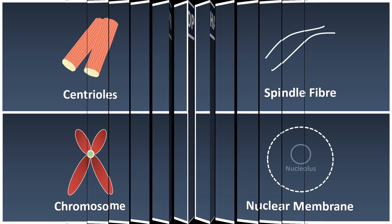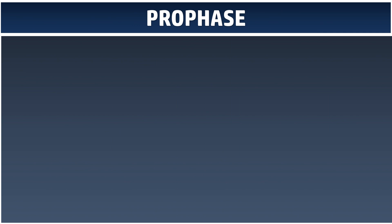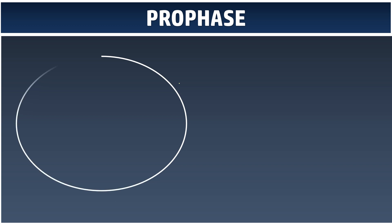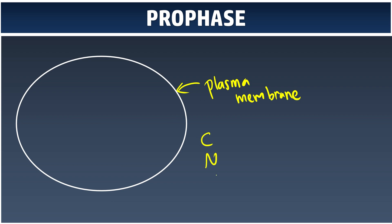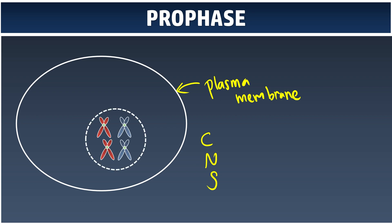Mitosis begins with prophase. We will use an animal cell to illustrate mitosis. So we have an animal cell — the outer layer is the plasma membrane, sometimes referred to as the cell membrane. We start the story with CNS. We have four chromosomes, which are our four fishes. Humans have more than four chromosomes, but we use four for simplicity. They are surrounded by the nuclear membrane. We have the centriole, which is our fishing rod, and it will attach together with the spindle fiber, which is our fishing line.